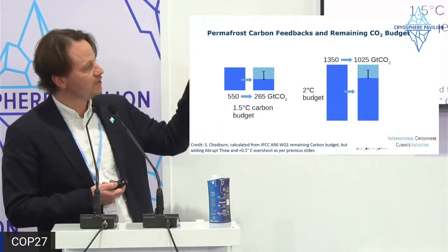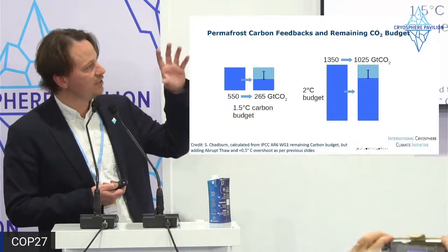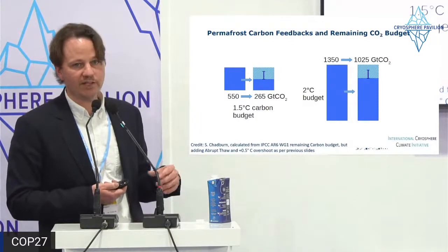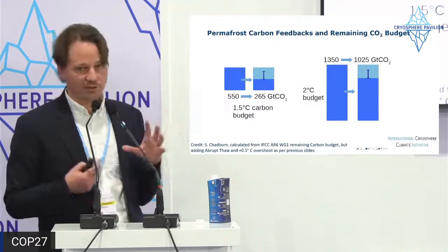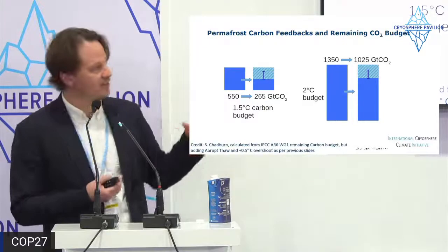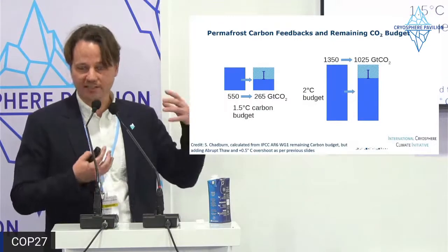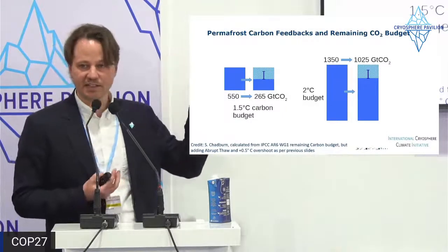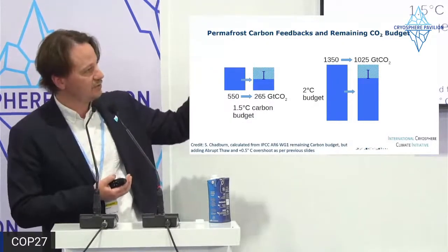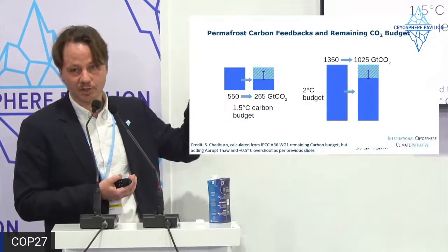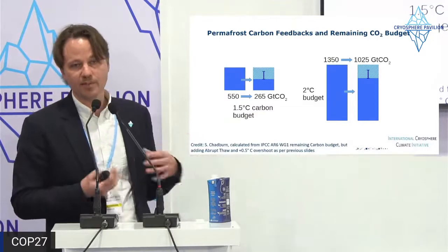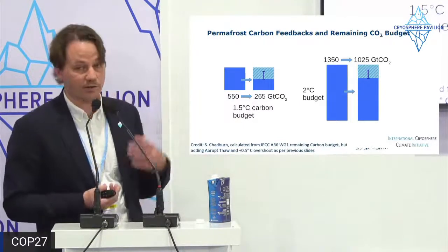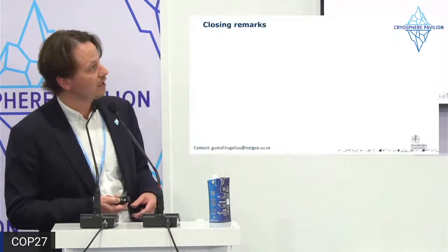All of this taken together shows that the permafrost carbon feedback potentially eats up a lot of the remaining carbon budgets to stay below 1.5°C or 2°C. The full squares represent the full carbon budget, and the hashed light blue areas show what is consumed by permafrost alone. Importantly, these permafrost emissions will primarily accelerate around 2100 or later — this doesn't eliminate the window for rapid action on the 1.5°C goal, but those emissions will still come later and will either add to the atmosphere or need to be removed with negative emission technologies.